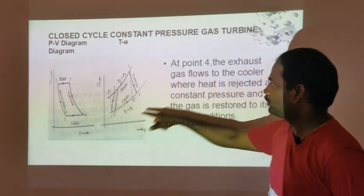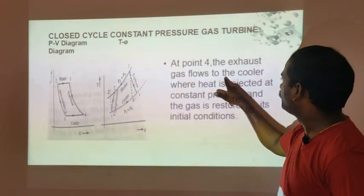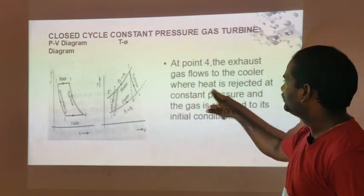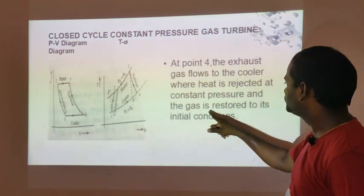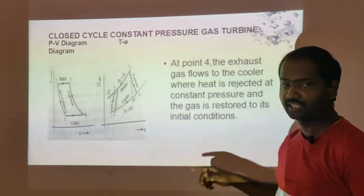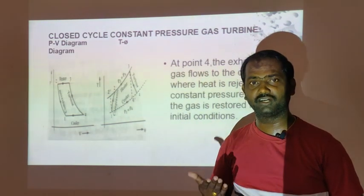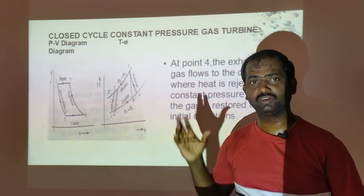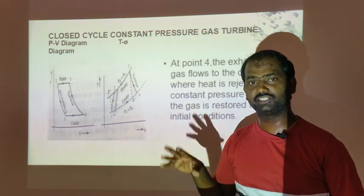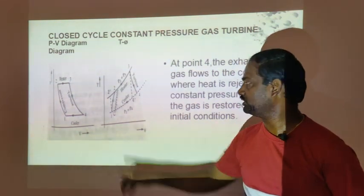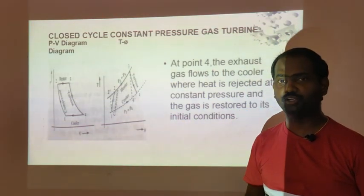At point 4, the exhaust gas flows to the cooler where heat is rejected at constant pressure and the gas is restored to its initial condition. As the temperature decreases in the cooler, the gas returns to its initial state and the next cycle begins.